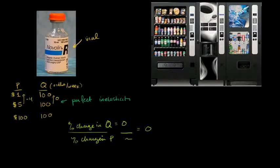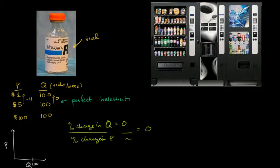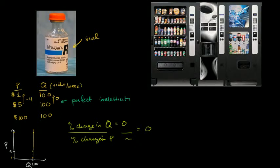And if you wanted to see what this demand curve would look like, let's plot it. This right over here is my price axis, and that is my quantity axis. No matter what the price is — whether it's $5, $1, $20, or $100 — they're going to demand 100 vials a week. And so a perfectly inelastic demand curve would look like this: it is a vertical line. It doesn't matter what price you pick — the quantity demanded is always going to be the exact same thing.